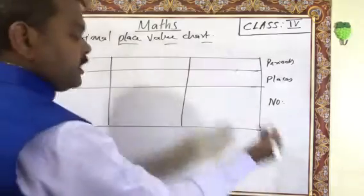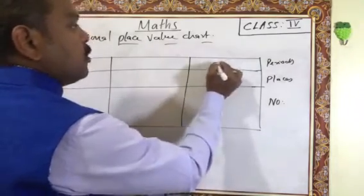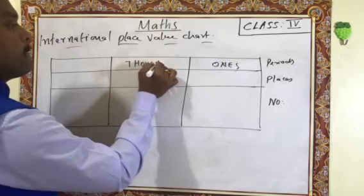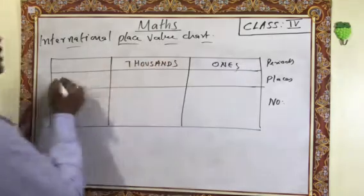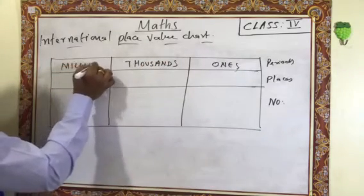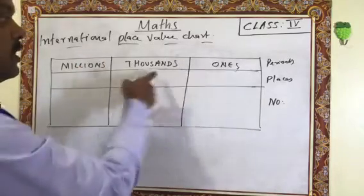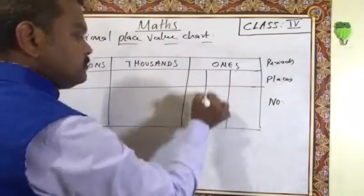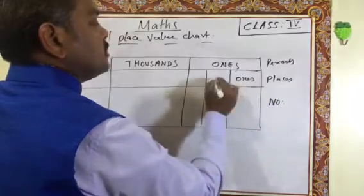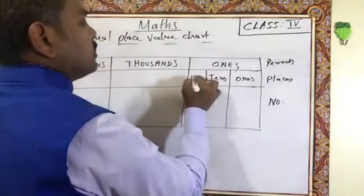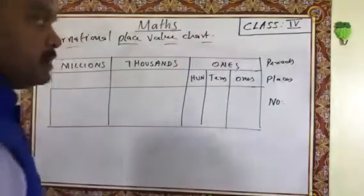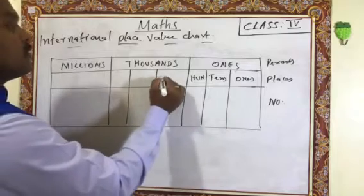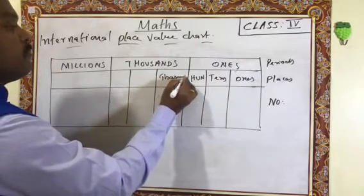There are three periods in the International place value system. From right side to left side: the first period is called the Ones period, the second one is called the Thousands period, and the third one is the Millions period. The Ones period has three places: Ones, Tens, and Hundreds — same as in the Indian place value system.